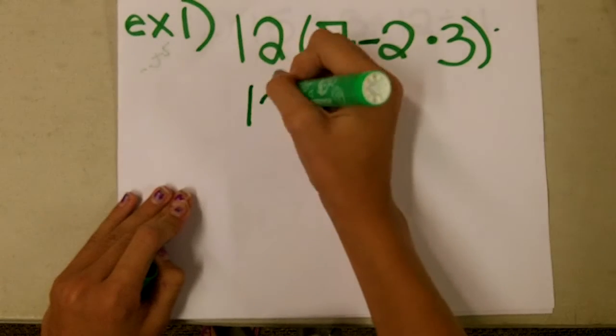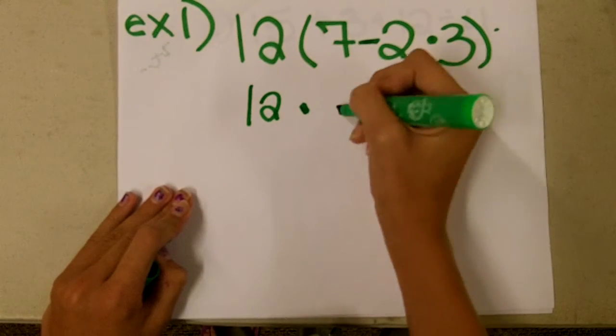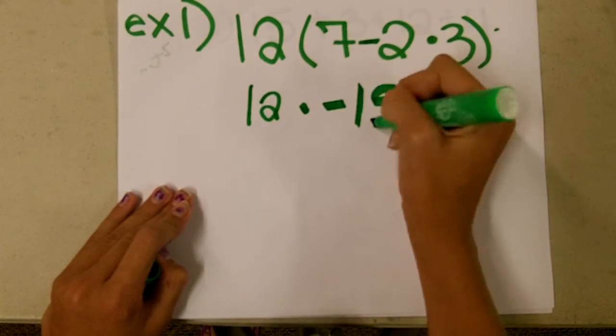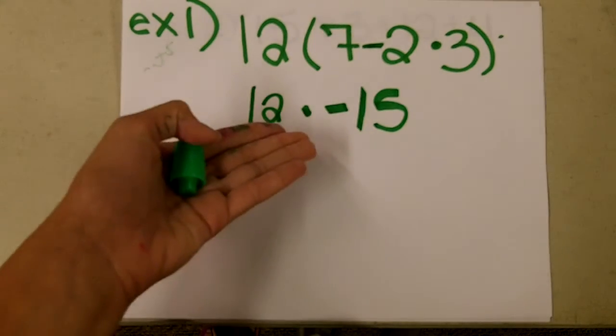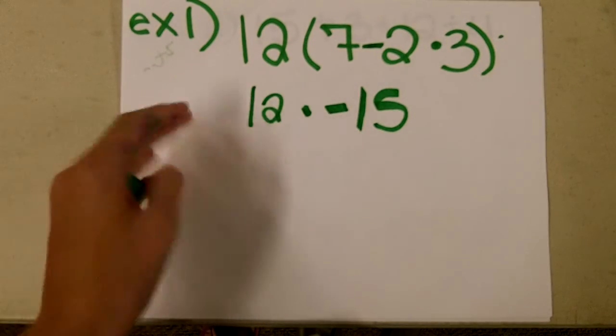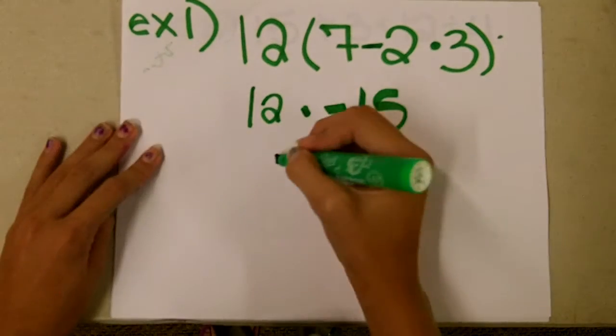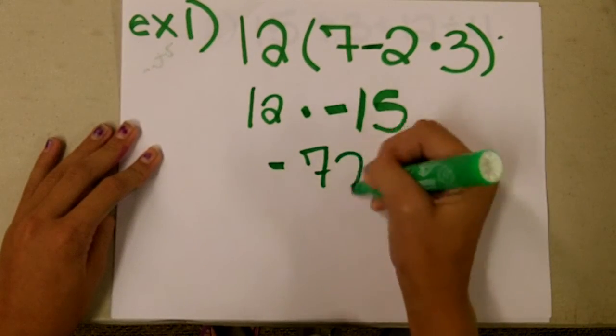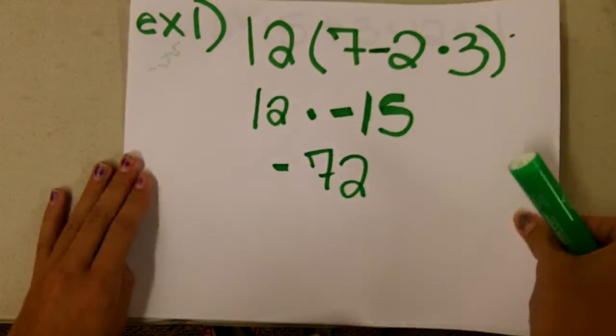So, 12 times negative 15. The next step is multiplication. So, 12 times negative 15 is negative 72. And that's your answer.